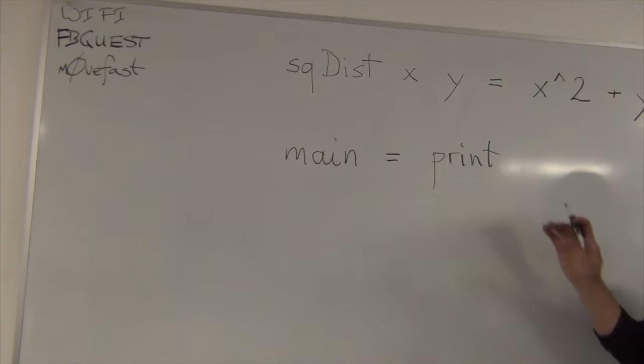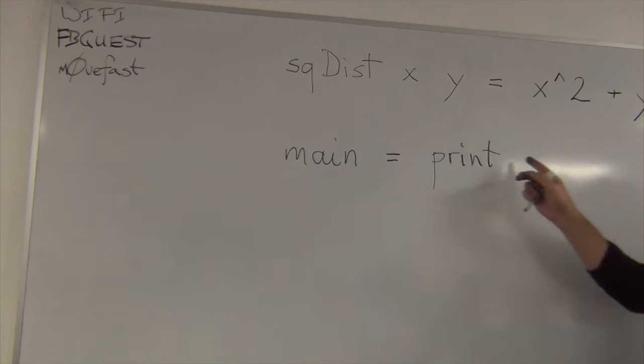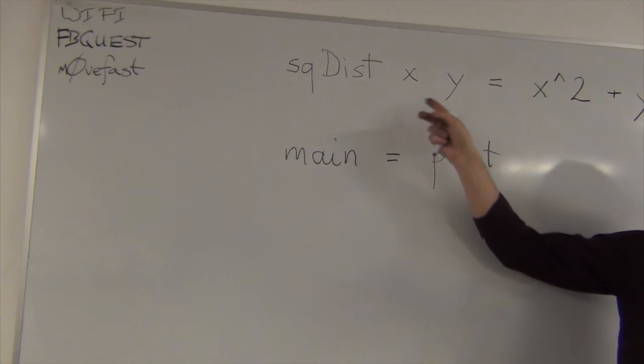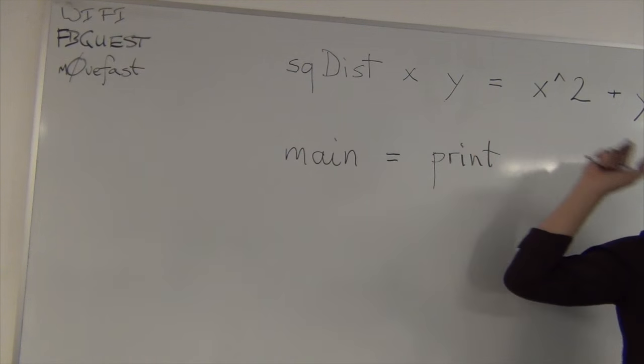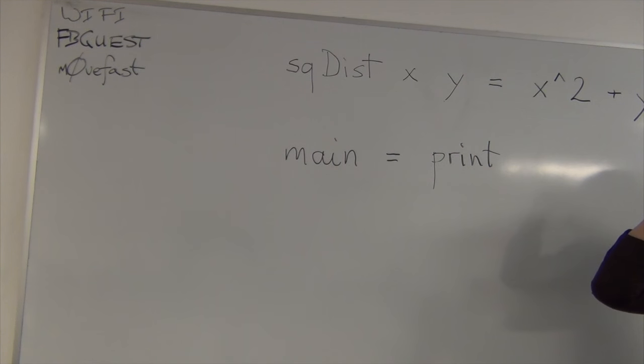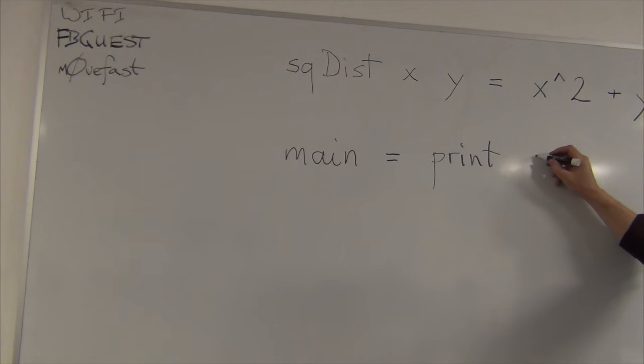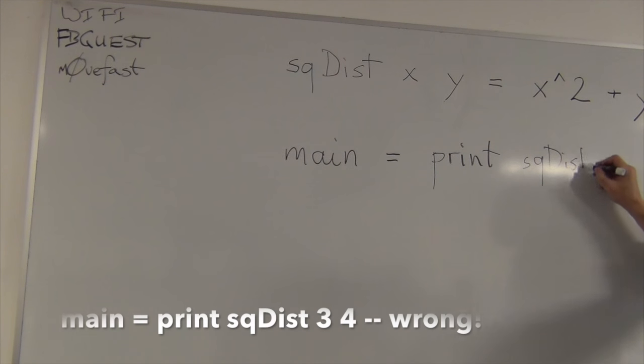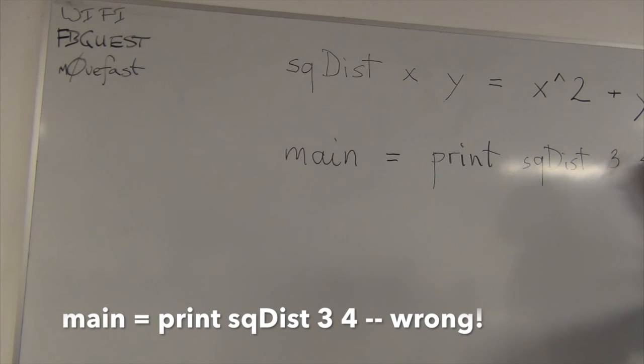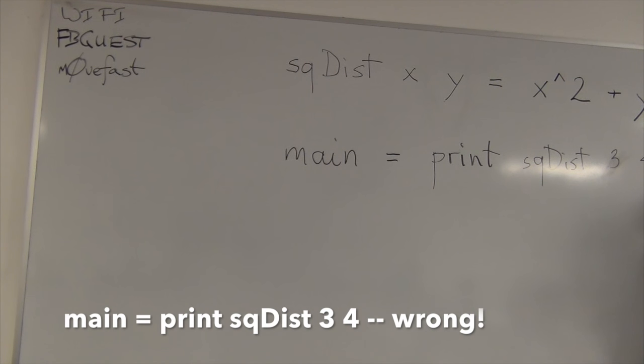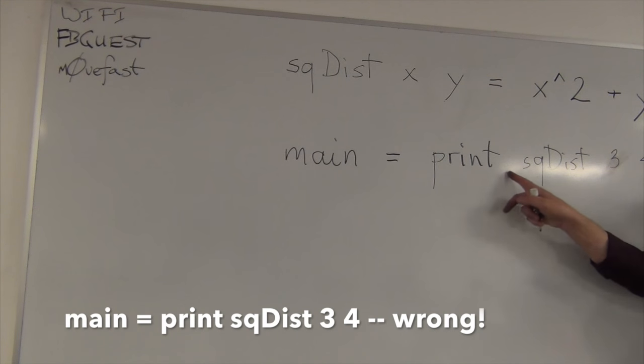And being convertible to a string is a very well-defined thing in Haskell. And we'll get to it maybe in the future lesson. But we have print... Okay? And... Are you working? I'm following up. Now, here we want to print the result of the call to square distance with some two numbers. Okay?